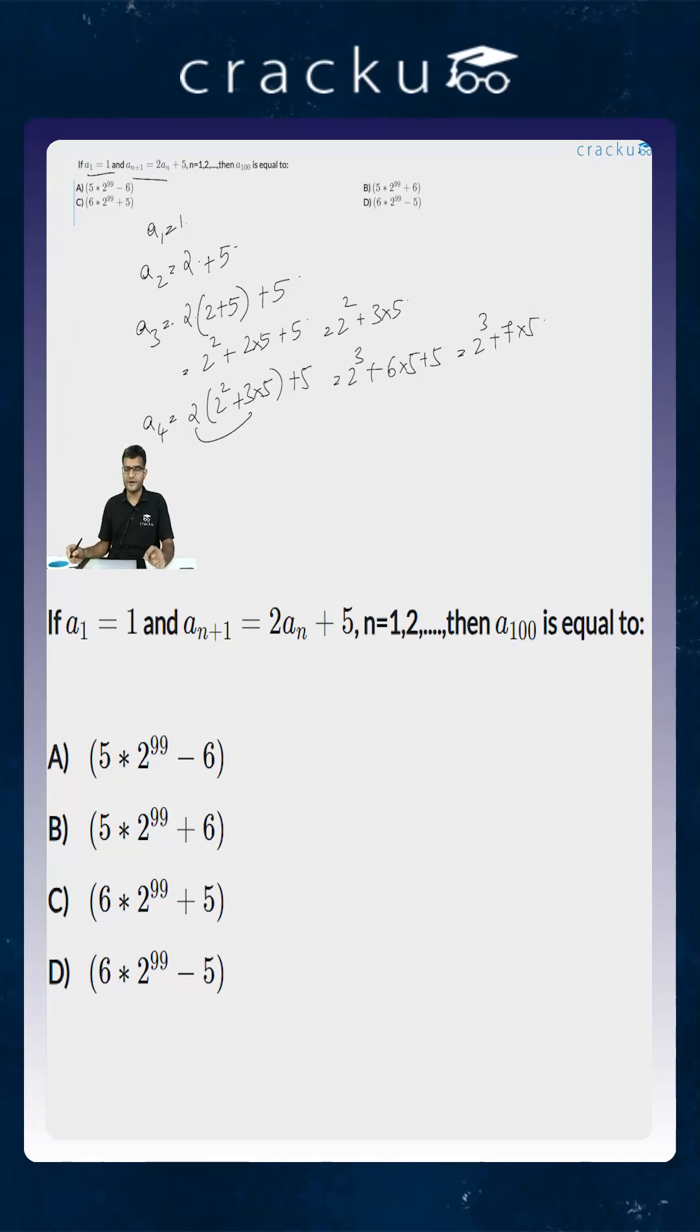Now some sort of a pattern should be apparent to you. If you're not sure, then you can calculate the value of A₅. A₅ is equal to 2 times (2³ + 7×5) plus 5, which is equal to 2⁴ plus 2×7×5 plus 5. This is equal to 2⁴ plus 15×5.